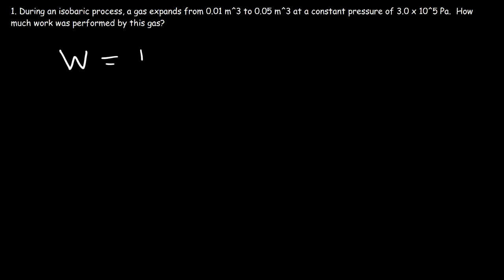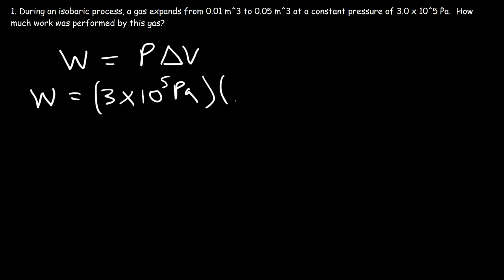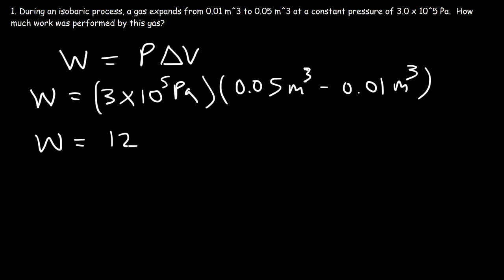The formula we need to calculate the work done by a gas as it expands or is being compressed at constant pressure is W = P ΔV. So the pressure in this example is 3 × 10⁵ pascals and the change in volume is the final volume of 0.05 cubic meters minus the initial volume of 0.01 cubic meters. The change in volume is 0.04, multiplied by the pressure, so the work equals 12,000 joules.